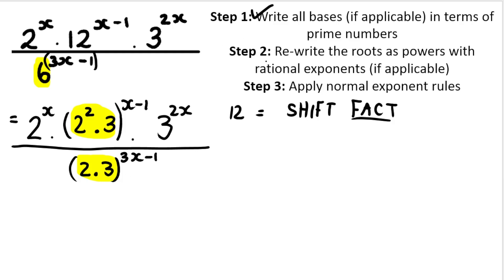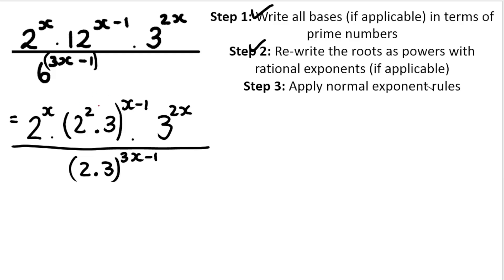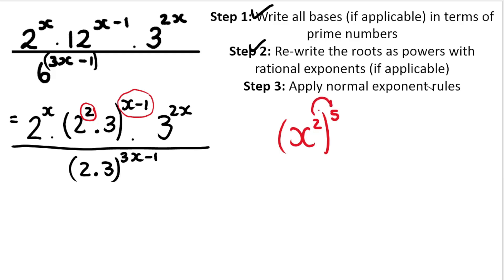We don't have anything in step two that's applicable — rewrite roots as powers — we don't have roots. Then the next step: apply normal exponent rules. If you've missed my video recapping basic grade nine, grade ten exponent rules, please go check that out first. Essentially, what we need to do is apply exponent rules to simplify this part of the expression and this part. The rule we're talking about is the exponent inside multiplied by the exponent outside. If you have x to the power of two raised to a five, you take the inside exponent multiplied by the outside exponent and get x to the power of ten.